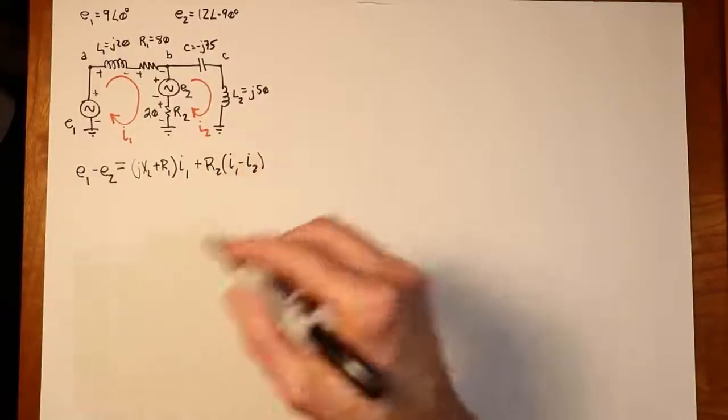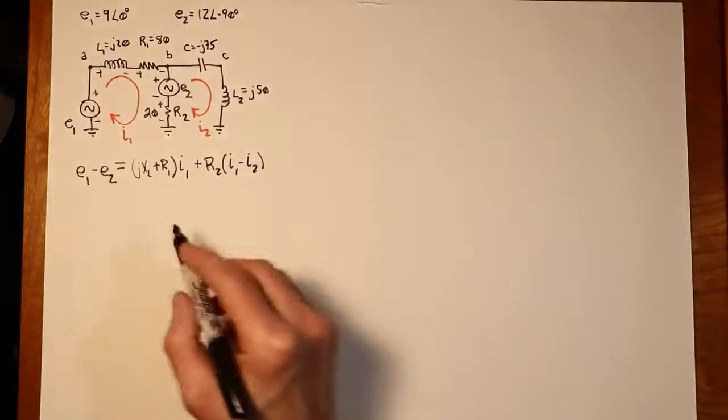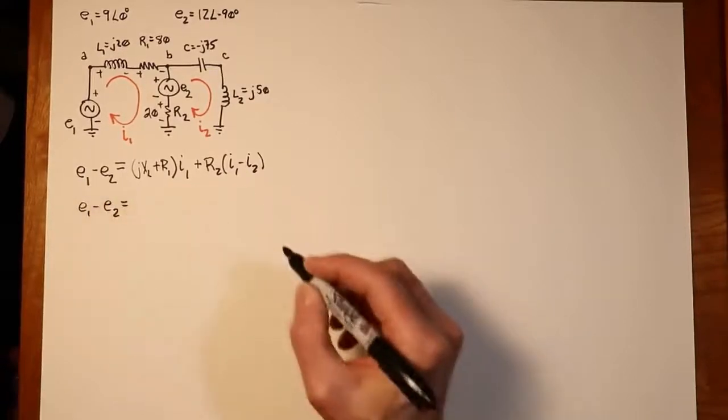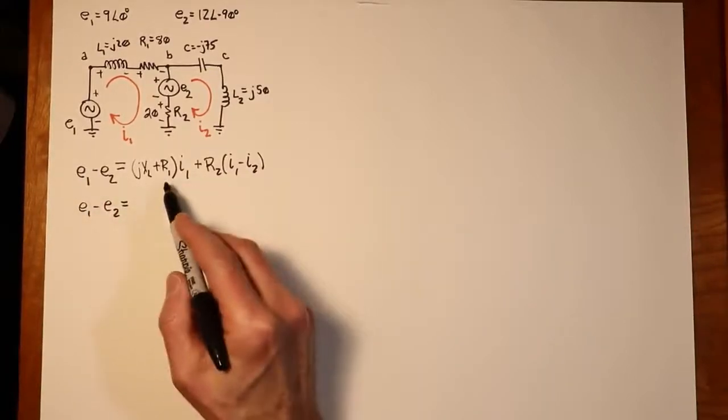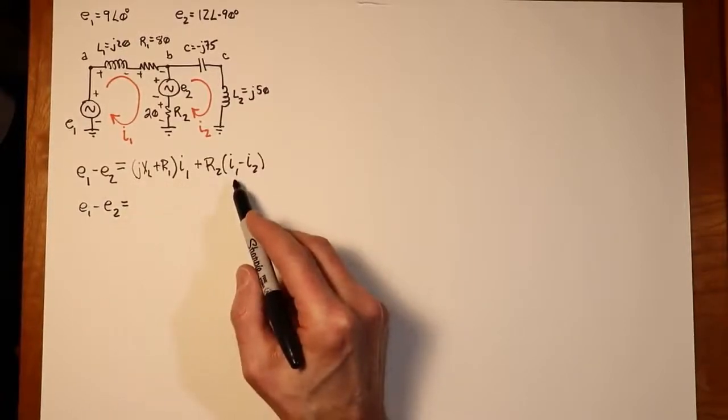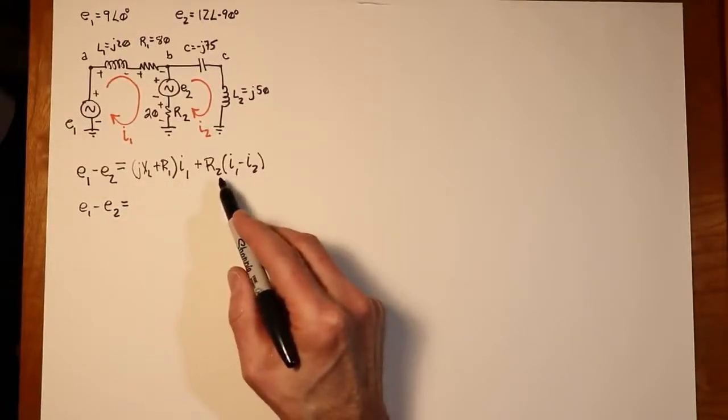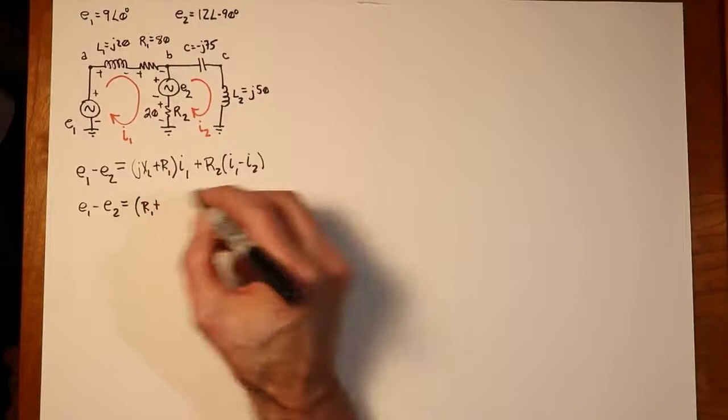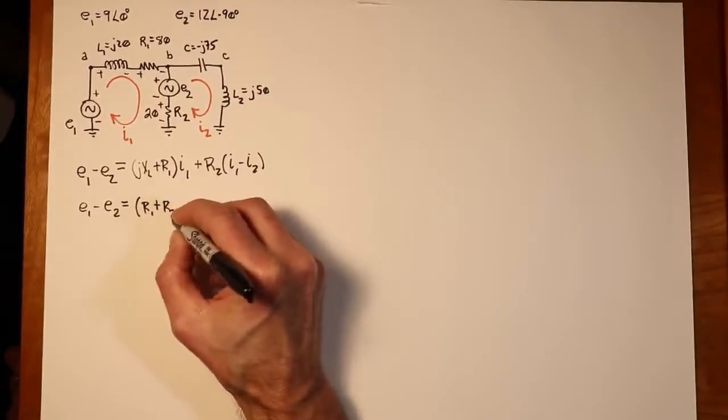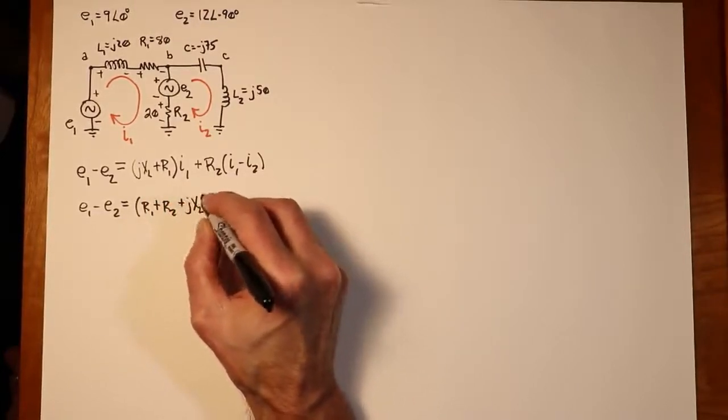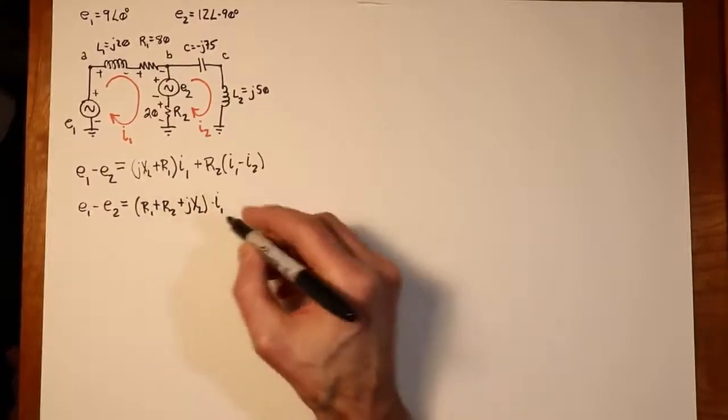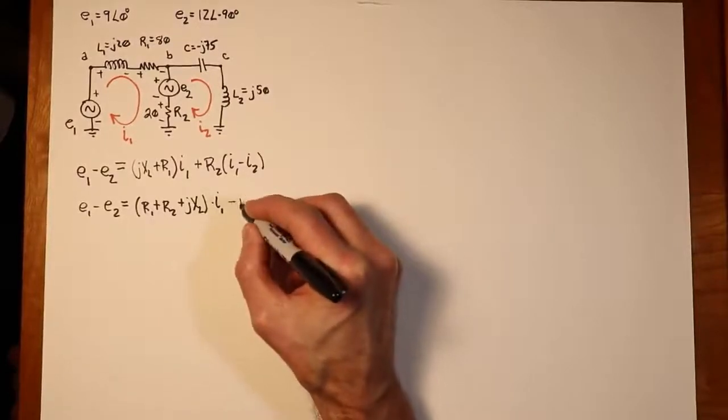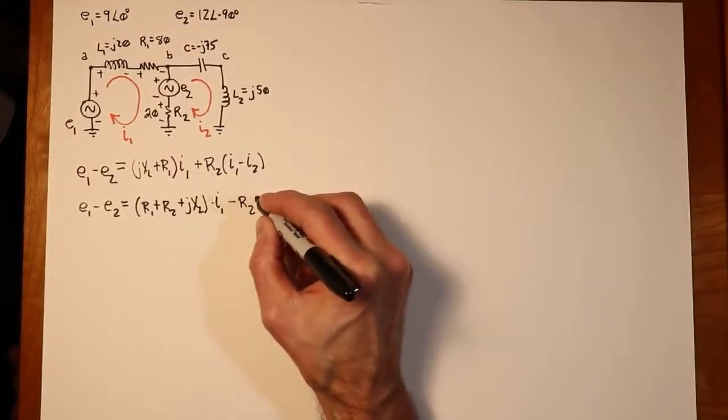Now we have to simplify this. Let's collect up some terms. I'm going to leave the E1, E2 over here. What do we have in terms of I1 terms? Well, we've got the R1, the JXL, and we also have this R2 term over here. So we have an R1 plus the R2 plus the JXL. And that's all times I1. And then we just subtract off the I2, R2 term. So that's minus R2, I2.